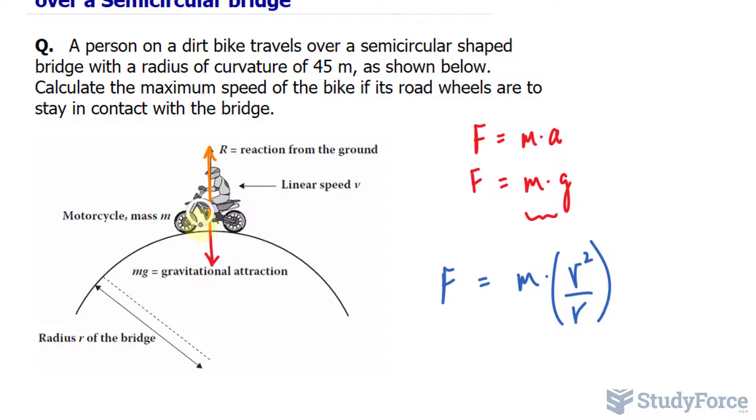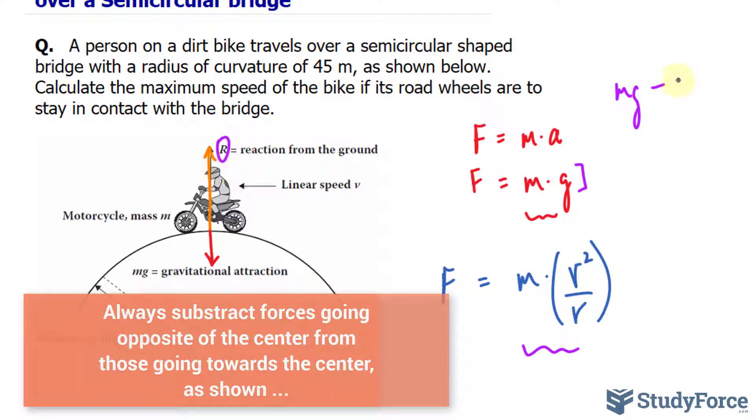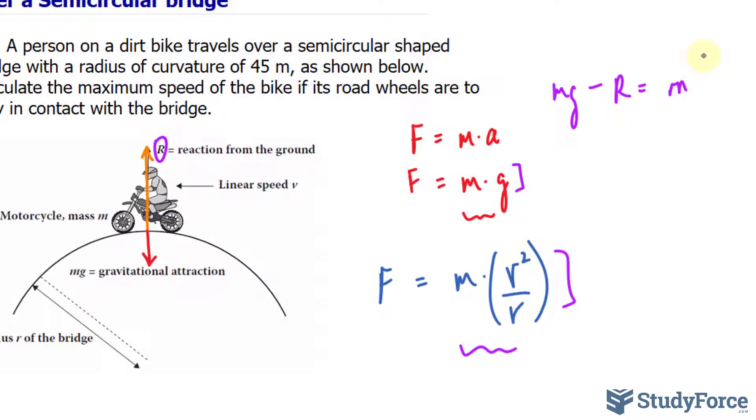So what I will do is take the difference between these two forces and make that equal to the centripetal force. Let me show you what I mean. So I'll take mg, this expression right here, and subtract it by the normal vector, which the diagram has been noted as r, and make that equal to this expression, m(v²/r).